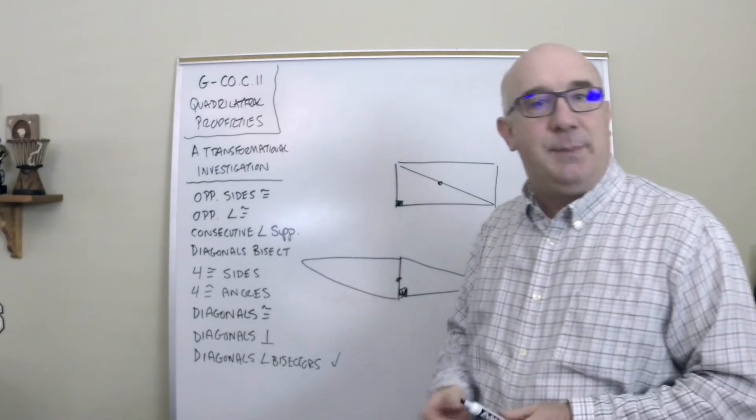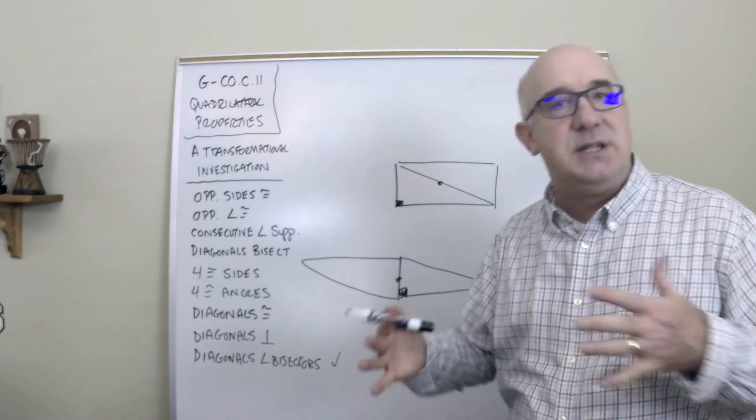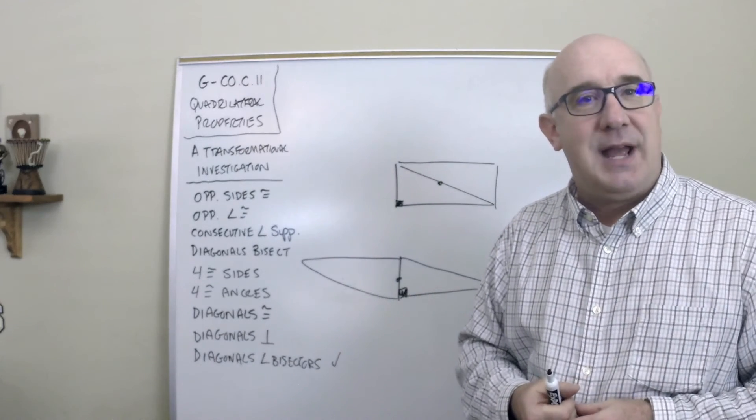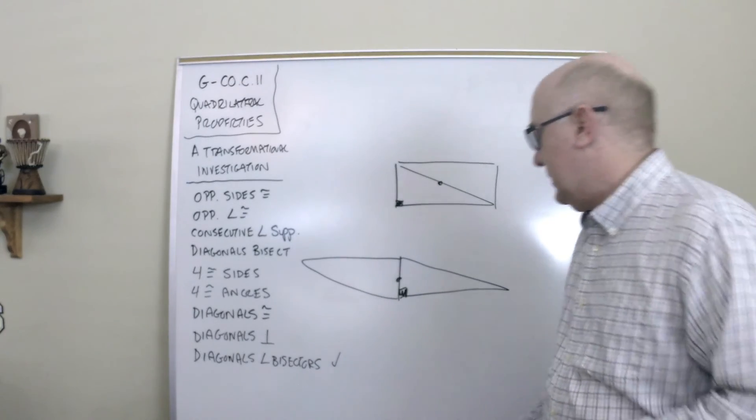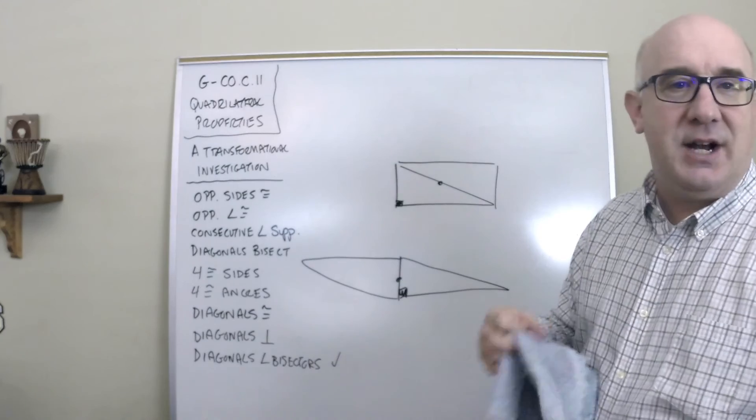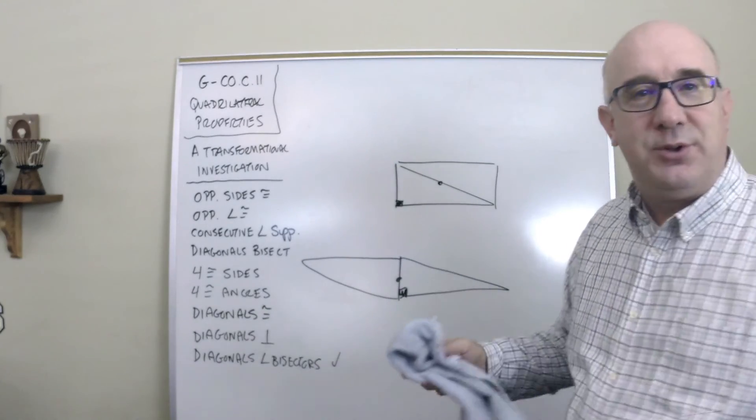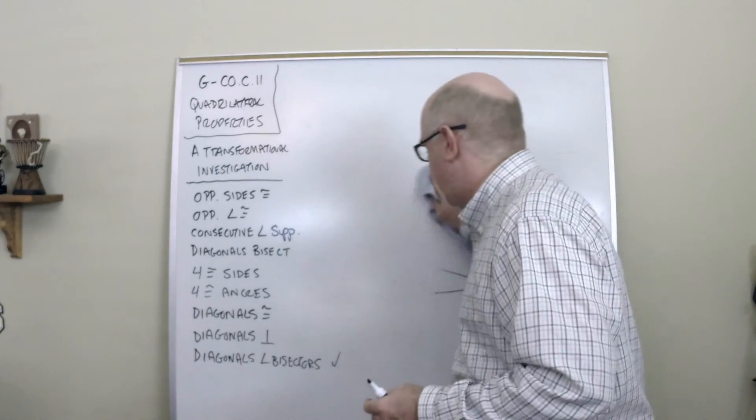This list here represents the typical things that are found in pieces and parts of these quadrilaterals, and so you want to just get used to understanding what they are and how they work. This is kind of an inside-out approach to finding those relationships.